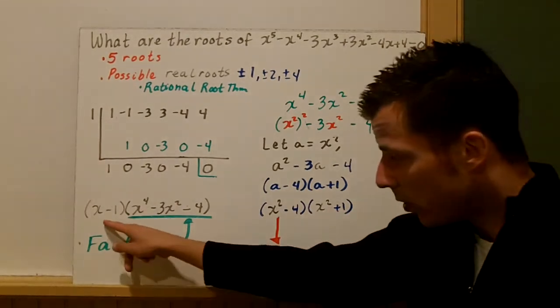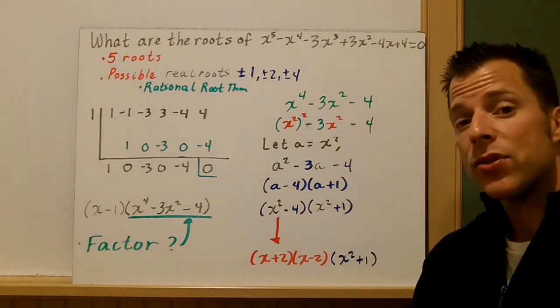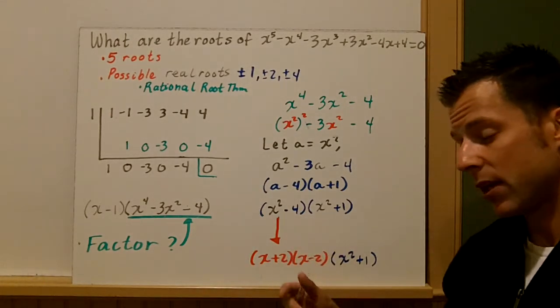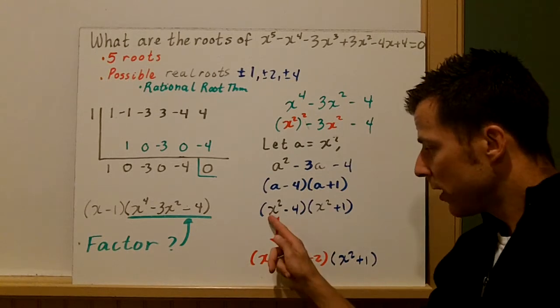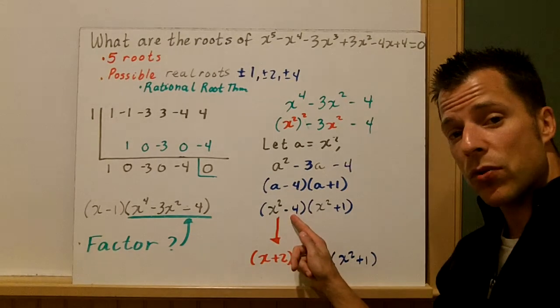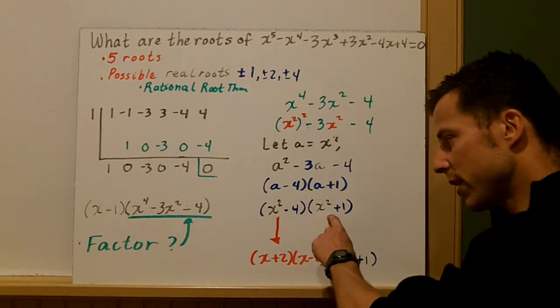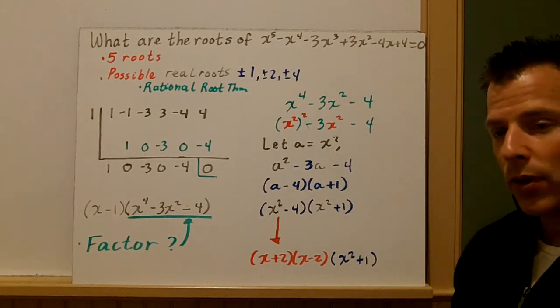Now, we have one factor here. We have to continue to factor. So we look at these parentheses and think, well, can I factor either of these? Look at this first one. Difference of two squares. So you get (x + 2)(x - 2). And let's go to the next board and talk about x^2 + 1.